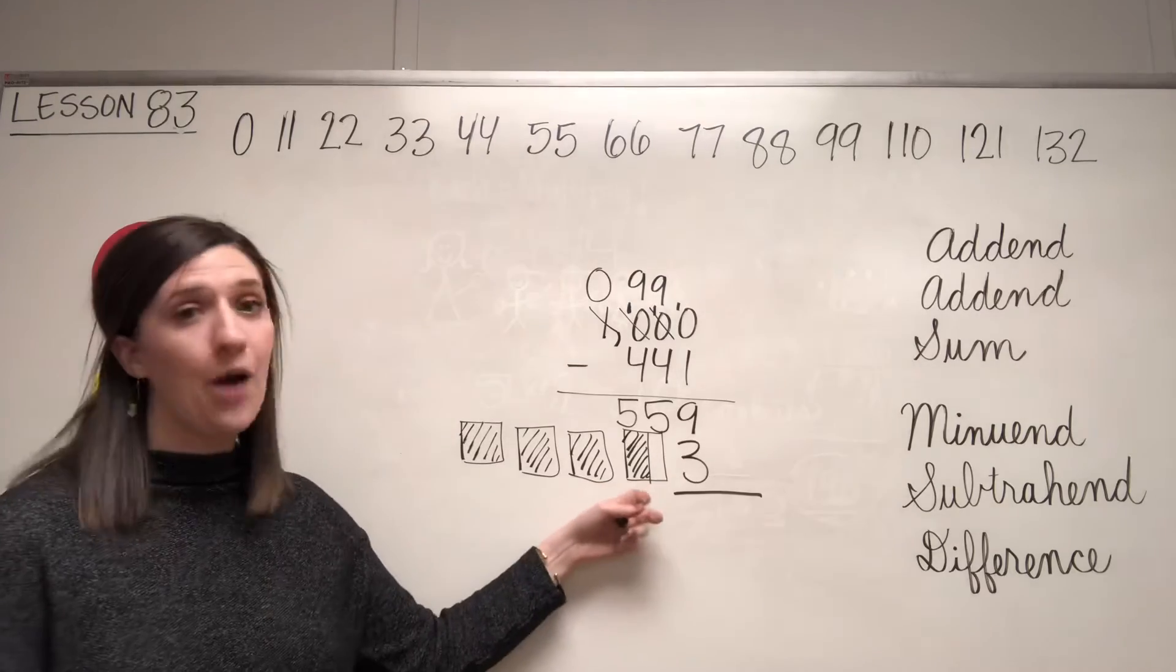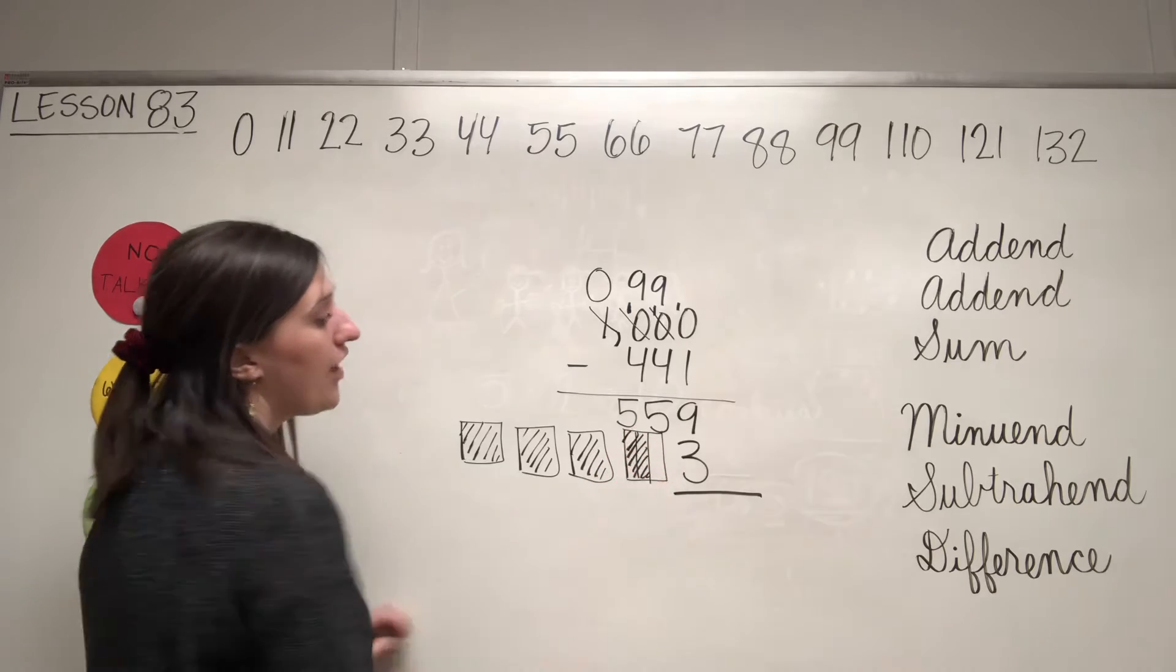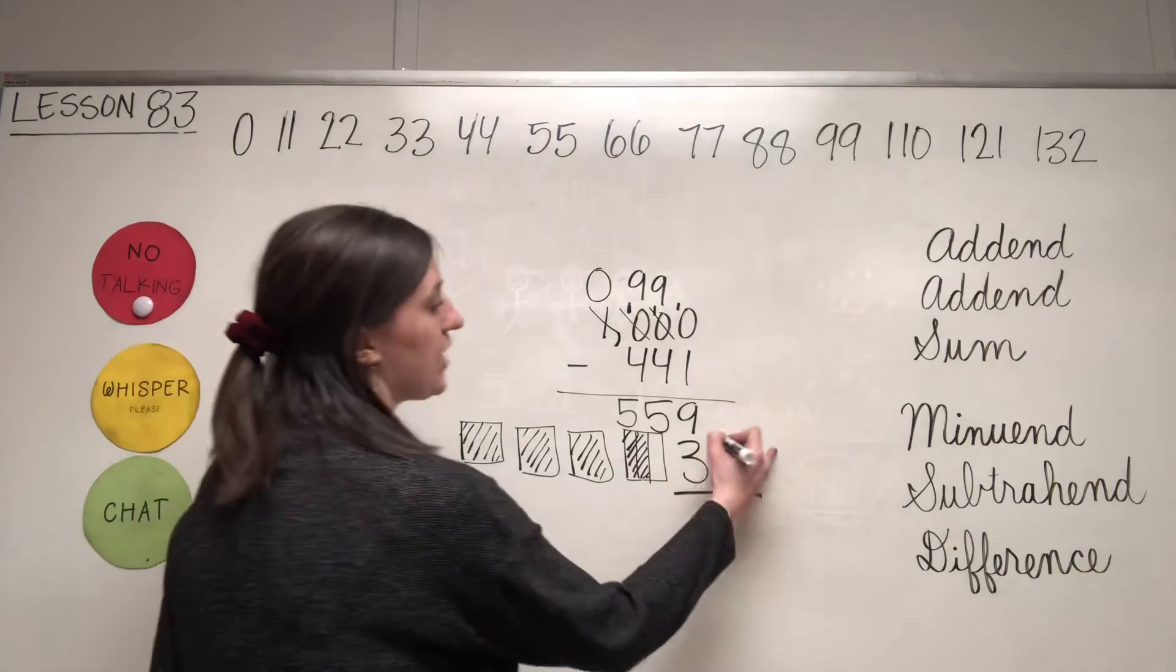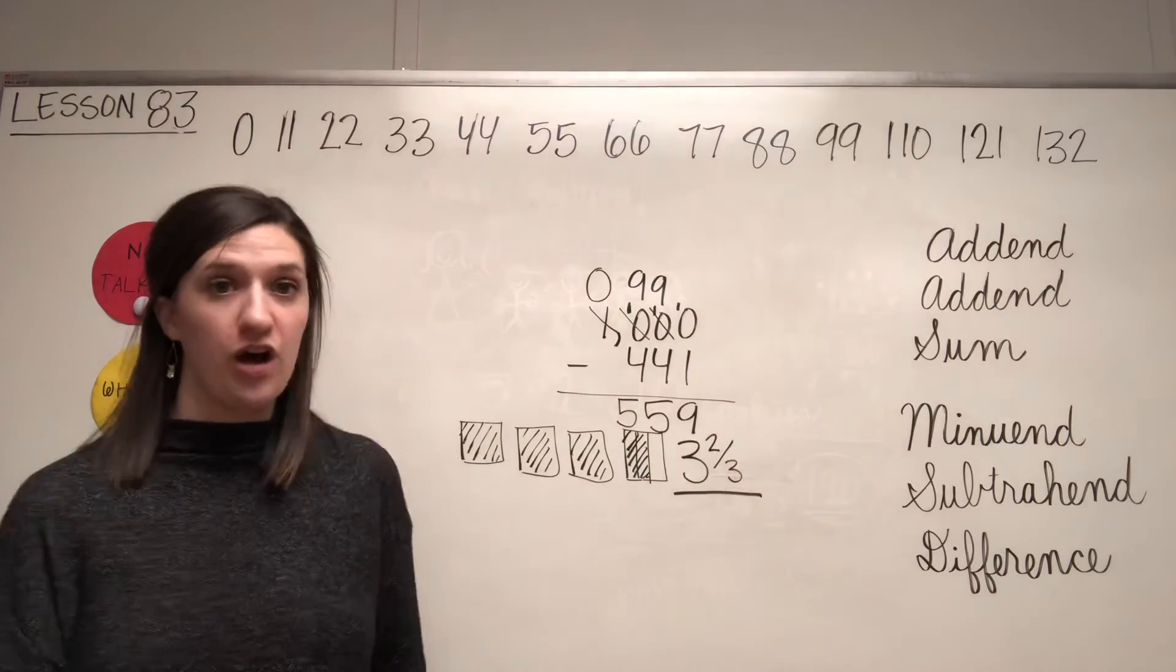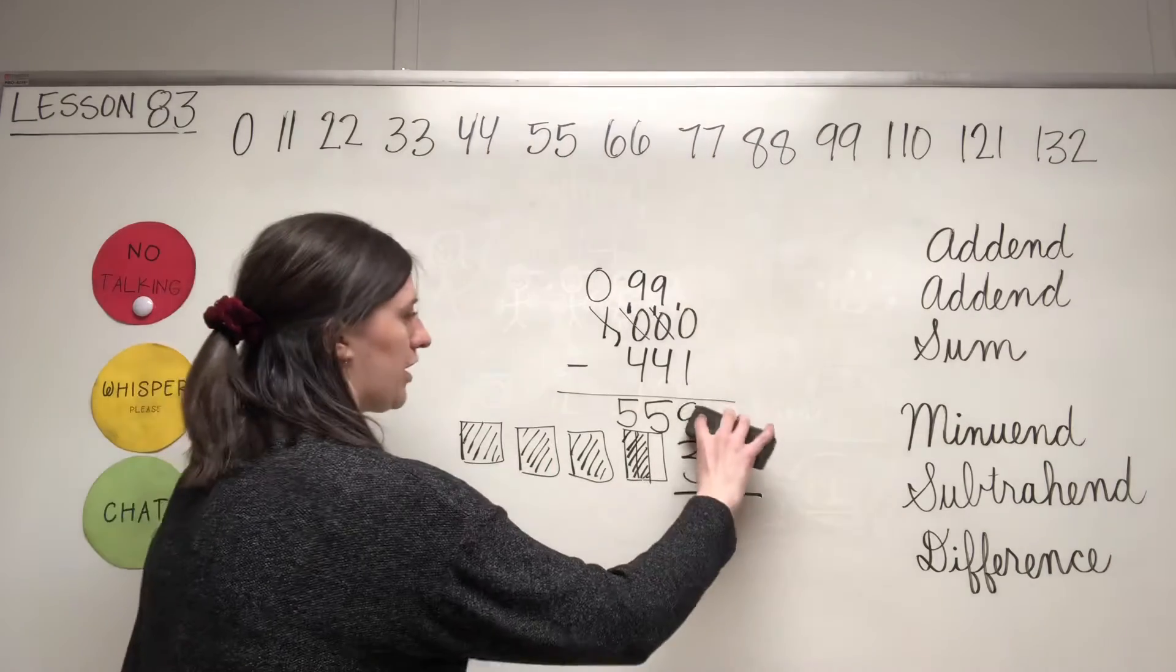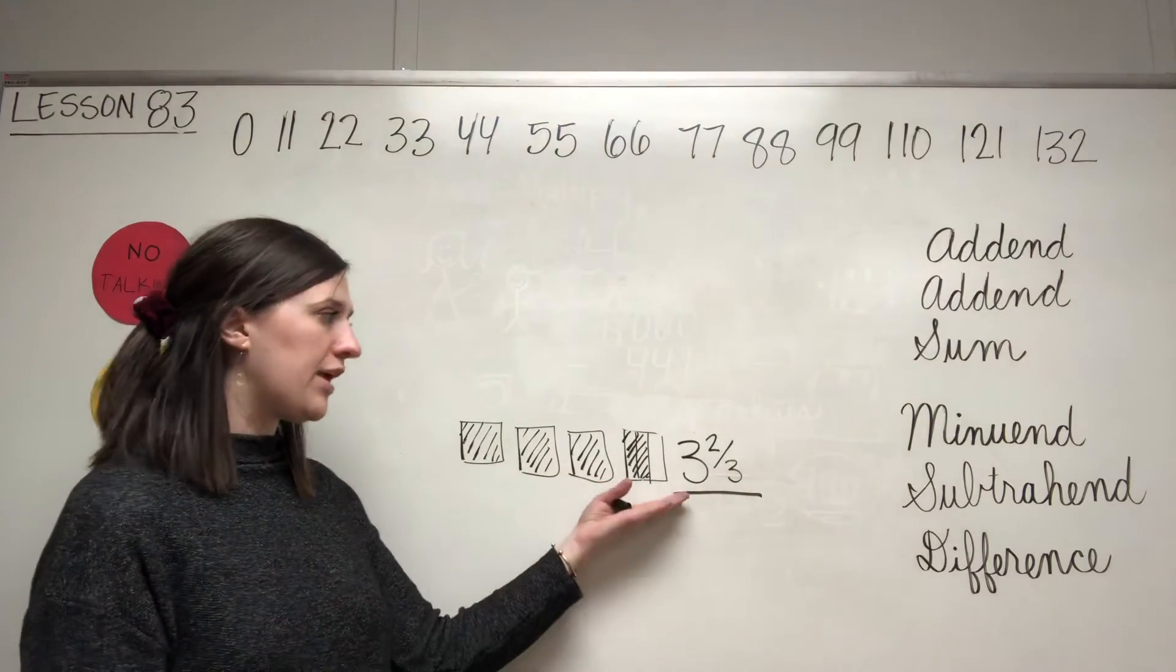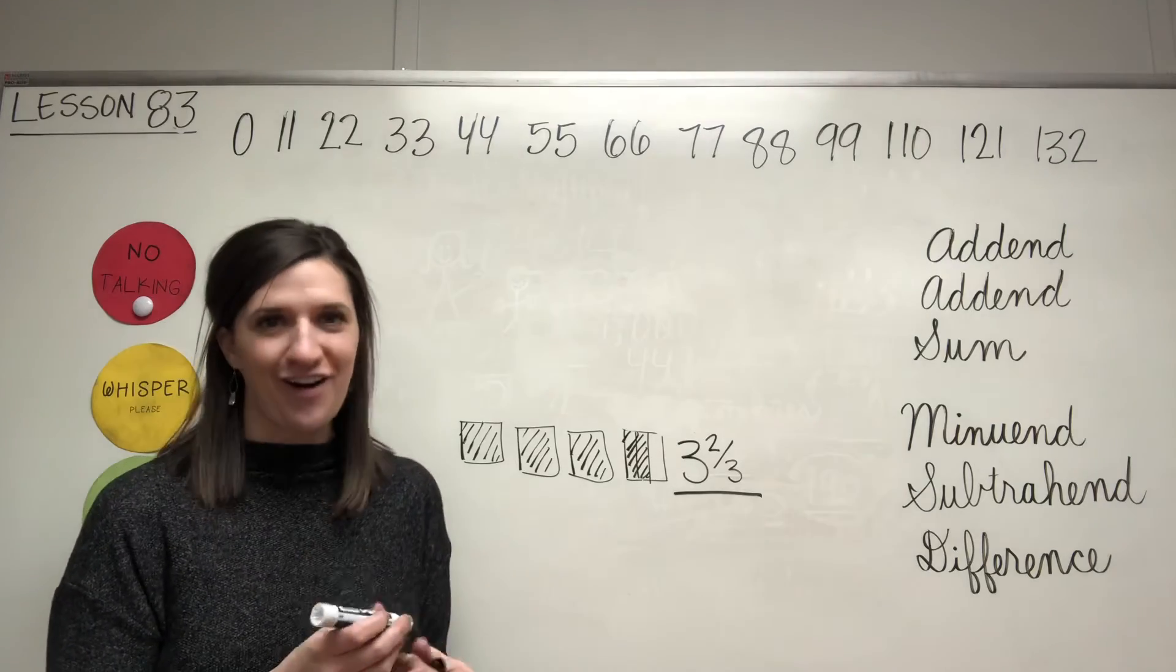And then you have to figure out how much of this one is shaded. And in this case, this one is two, one, two pieces out of the one, two, three are shaded. So we would say two of the three pieces are shaded. So the answer, I don't want this to confuse you here. The answer for this problem would be three and two thirds of the squares are shaded.